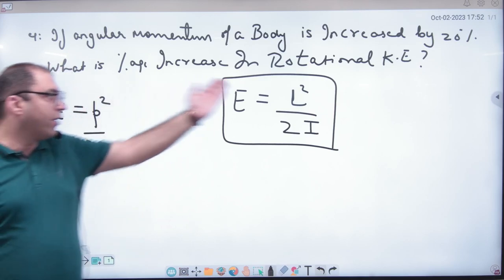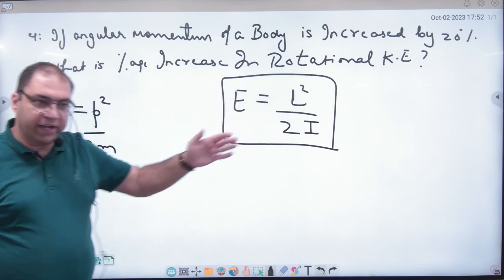In linear motion, E is p squared by 2m. In rotational motion, p is angular L, M becomes I. So let's put a formula.